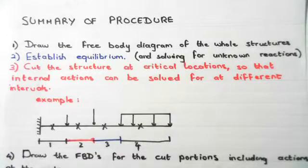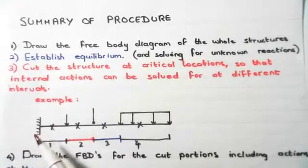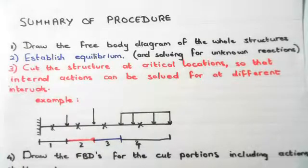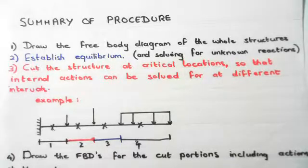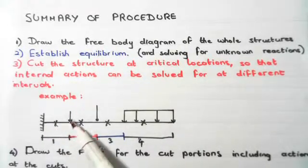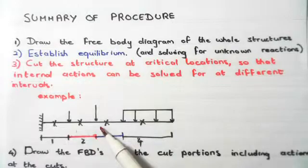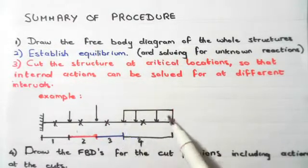The next step, and probably one of the most important, is to cut the structure at critical locations so that internal actions can be solved at different intervals. For example, looking at a cantilever with a fixed support, a UDL at the end, and two point loads: starting from the left, we take a cut immediately. Whenever something new occurs — a new point load or the start of a UDL — we take a new cut. So we have four cuts in this diagram.